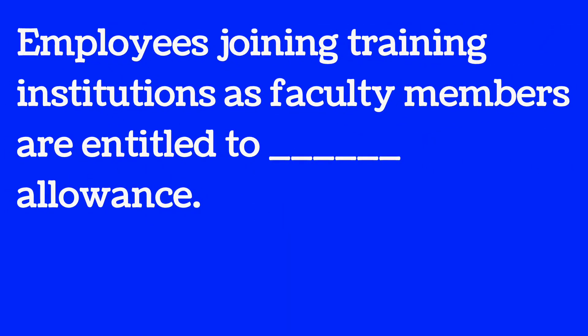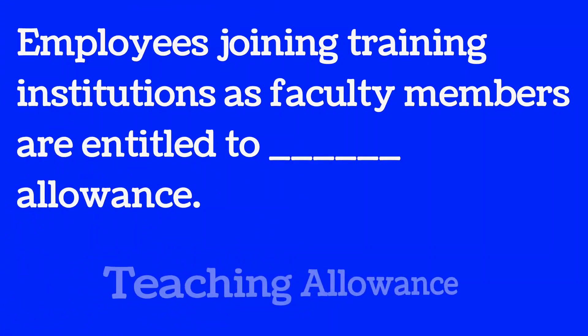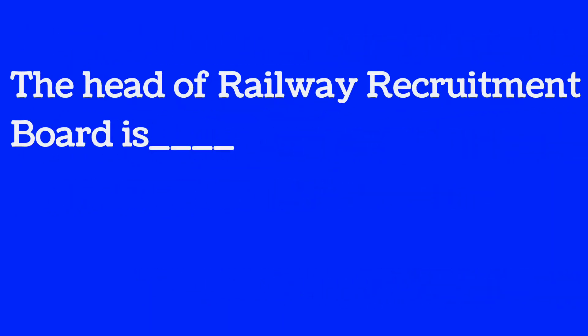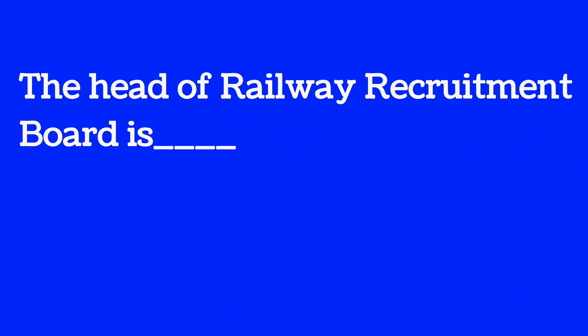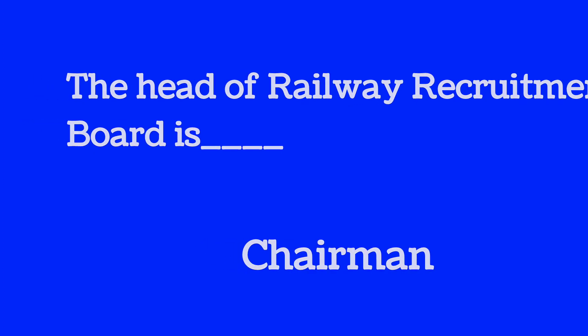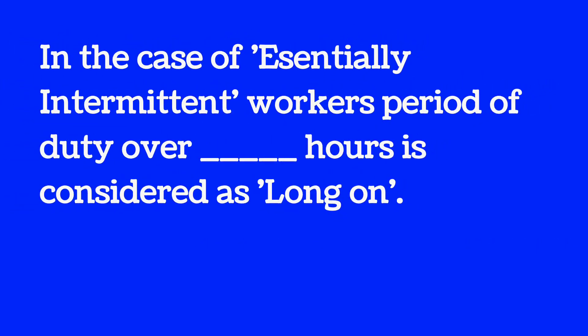Employers joining a training institution as faculty members are entitled to teaching allowances, not DA allowances. The head of a Railway Recruitment Board (RRB) is the Chairman. We fill up IPO with the name of Chairman.